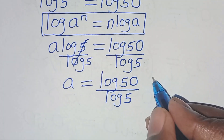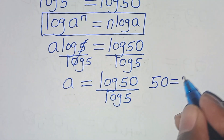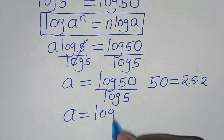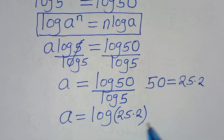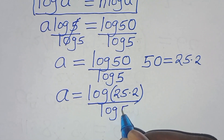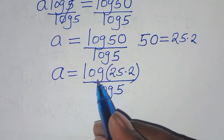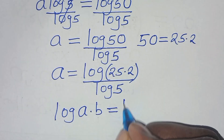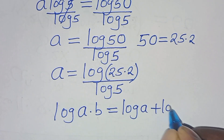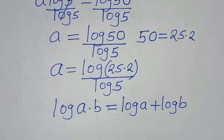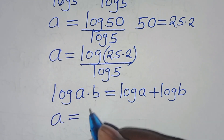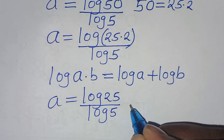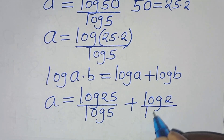The next step is that we can express 50 as 25 times 2, so let's substitute this, so that we have a is equal to log(25 times 2) divided by log 5. Now log(25 times 2) is in the form of log(a times b), which we can express as log a plus log b. Applying this logarithm property, then this implies that a is equal to log 25 over log 5, then plus log 2 over log 5.